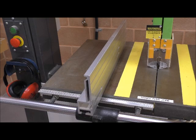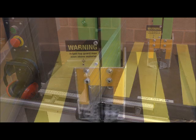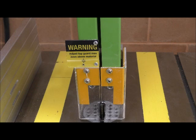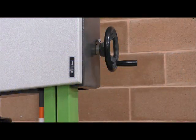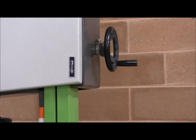A fence is attached to the table of the band saw to ensure safe straight cuts. An adjustable guard is provided to ensure that only a maximum of three millimeters above your work can be exposed to blade. This can be adjusted to suit your work by using the spindle on the side of the machine.